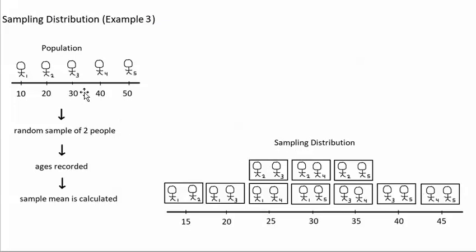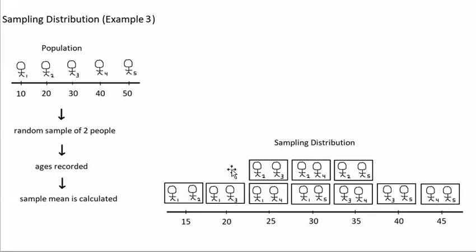Later we will talk about how a researcher can actually predict what shape the sampling distribution has without being able to look at all of the different possible samples. Finally, in each of these examples I was giving you a situation in which a person is taking a random sample from a small population. The examples aren't very realistic, but the reason is so that I could make a diagram of a sampling distribution to give you an idea of what a sampling distribution actually is. In a real life study, a person would take a random sample from a big population — for example, a random sample of 100 people from a city to estimate the mean age of the entire city.